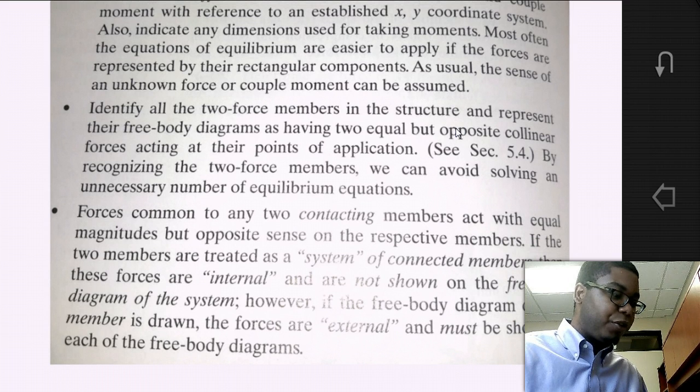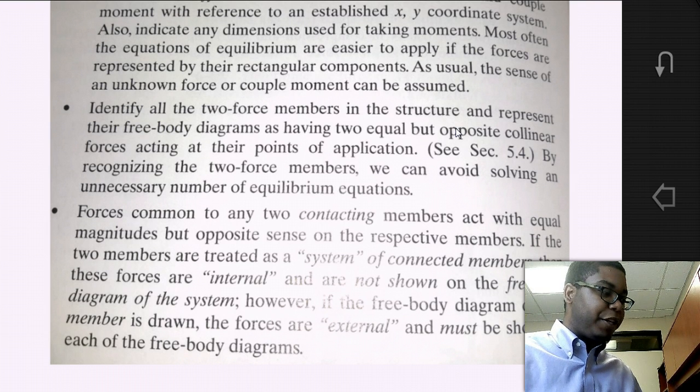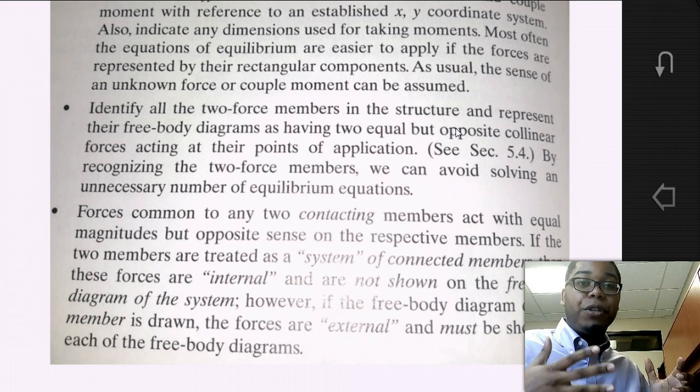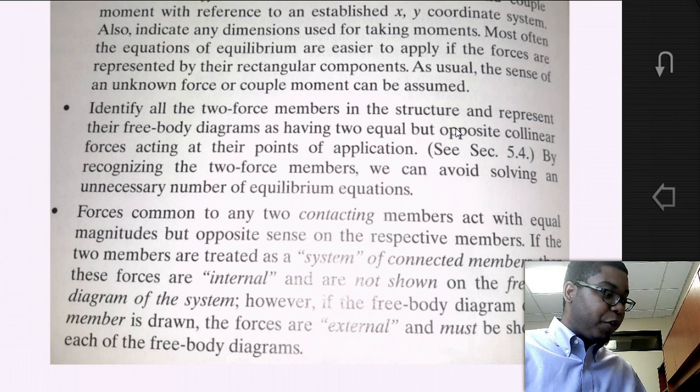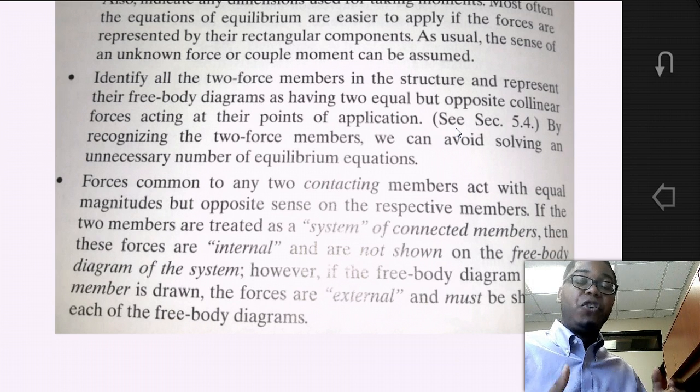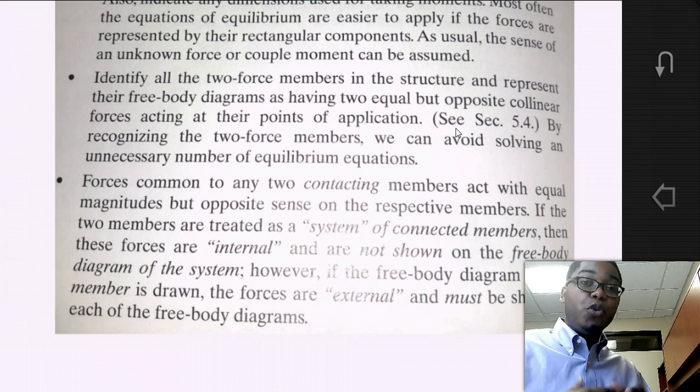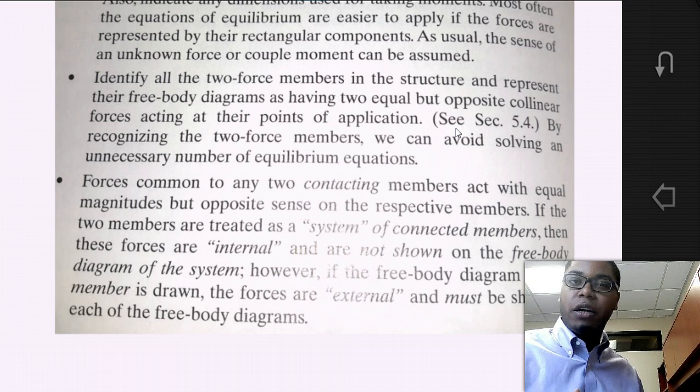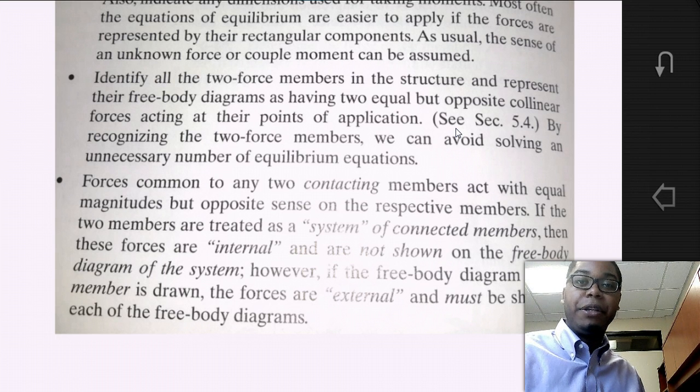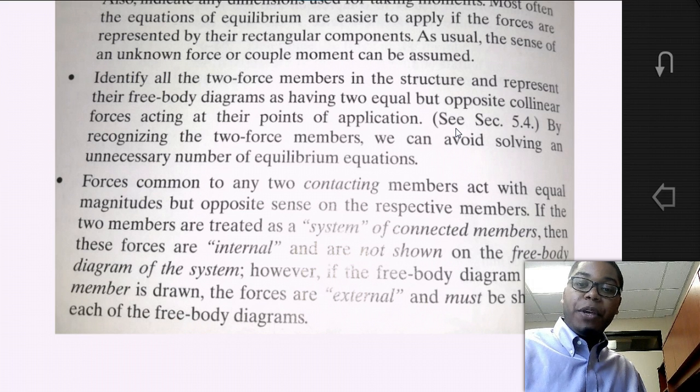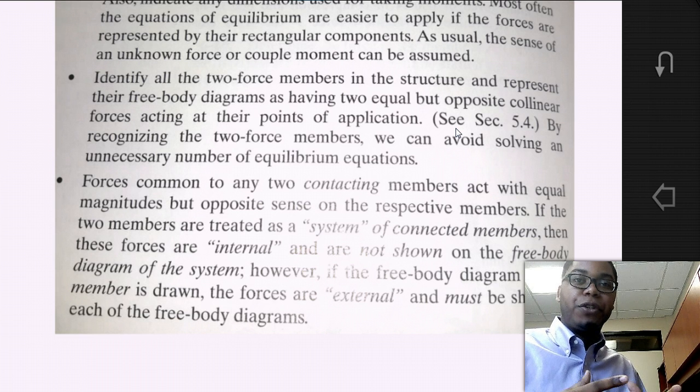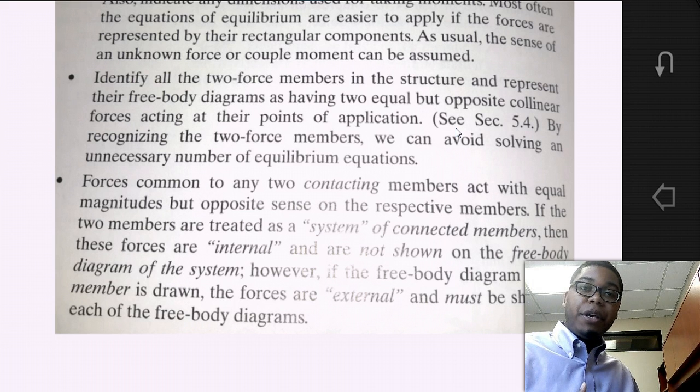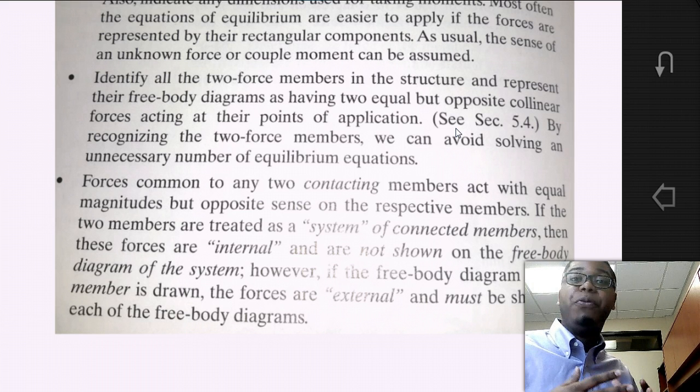Most often, the equations of equilibrium are easier to apply if the forces are represented by rectangular coordinates, using the right hand coordinate system. As usual, the sense of the unknown forces or moments can be assumed. We can use inspection to determine what their senses should be using a quick inspection of some of the forces in the x and the y and the moments. Or, we can assume initially that all of the unknown forces are in tension. And then when we solve our solution, if our final answer is a positive value, it's in tension. And if it's a negative value, then it was in compression.